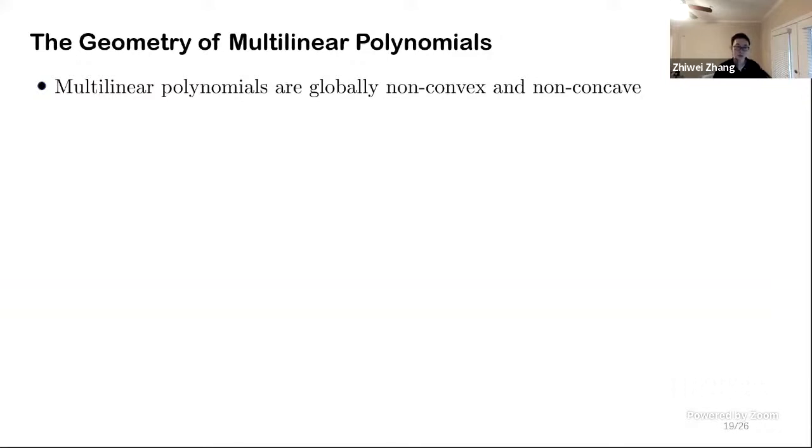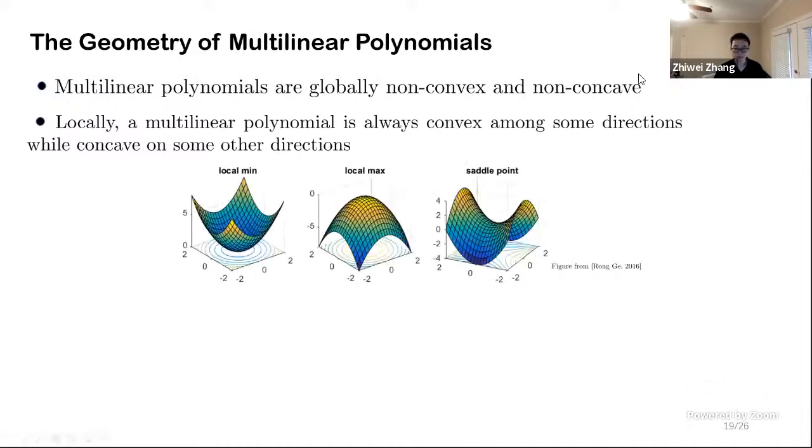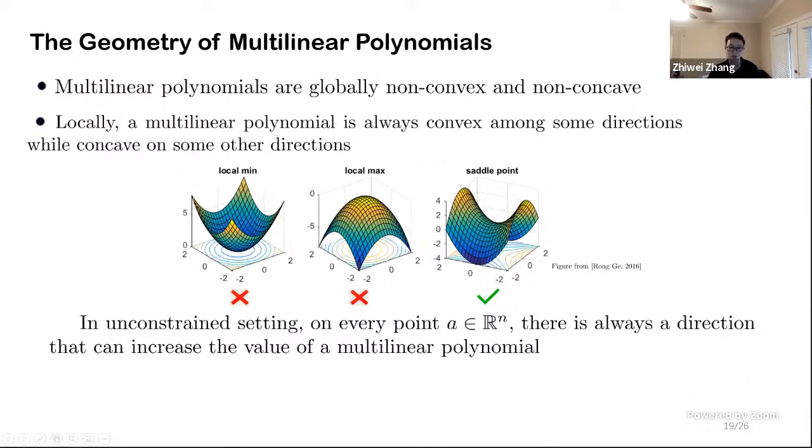Multilinear polynomials are globally non-convex and non-concave, which is not useful for optimization. But locally, multilinear polynomials are always convex along some directions while concave on some other directions. As a result, neither of this ball-shaped local minimum nor this local maximum can appear on the surface of multilinear polynomials. The only place which may trap our search is such a saddle shape.